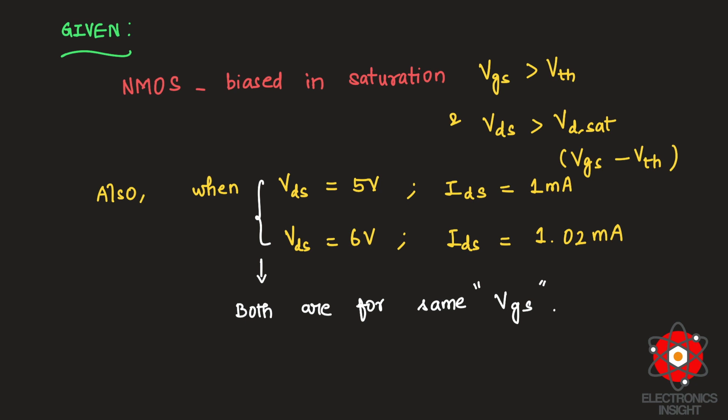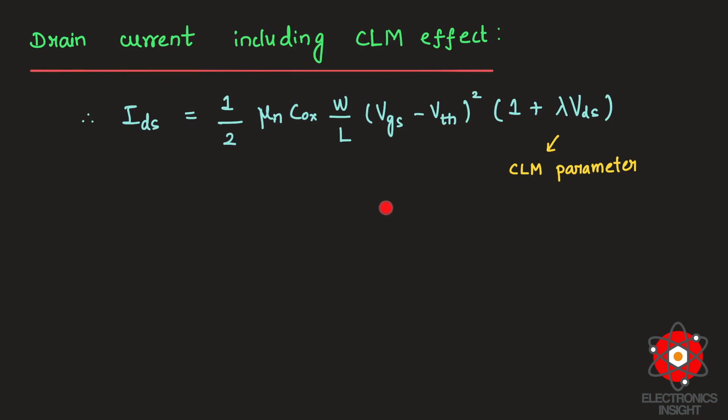Now what we need to do is start writing the drain-to-source current equation including the effect of channel length modulation. This is the drain current equation including the channel length modulation effect. The video link is shared below to refer to how to obtain this drain current. Please watch that to understand better how to derive the drain-to-source current for CLM effect.